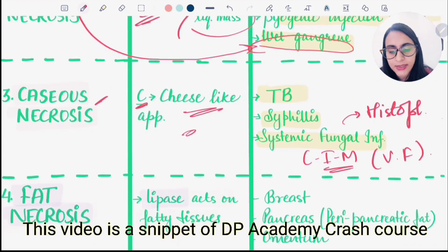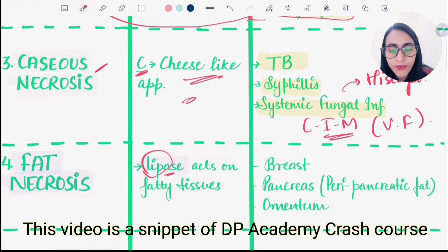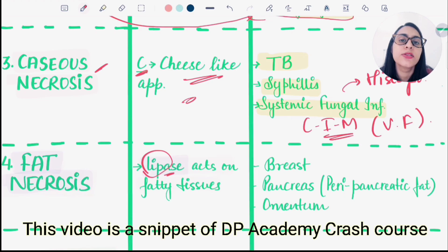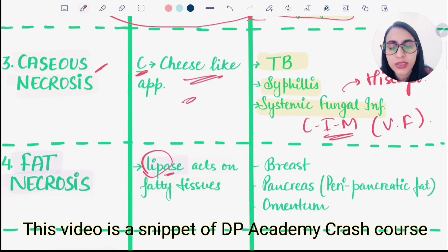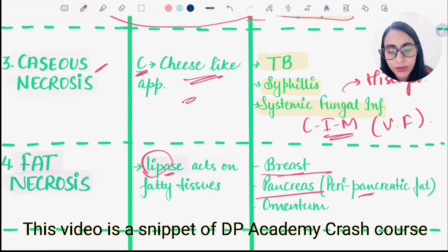In fat necrosis, lipase acts on fatty tissues and breaks down fat, producing chalk-like deposits — saponification. It is seen in tissues which contain fat, such as the breast, pancreas, peripancreatic fat, or omentum.